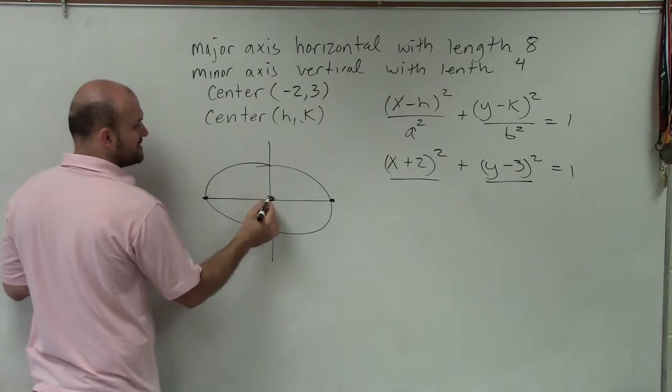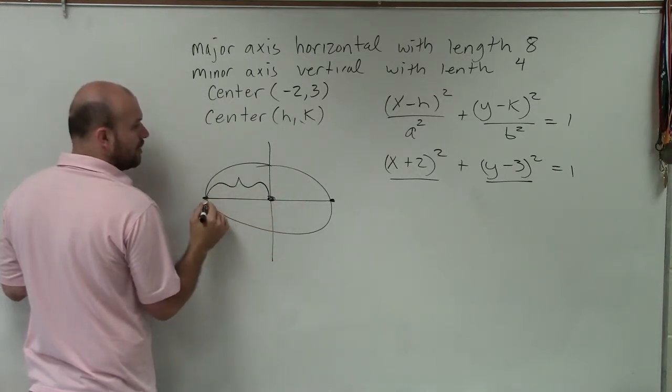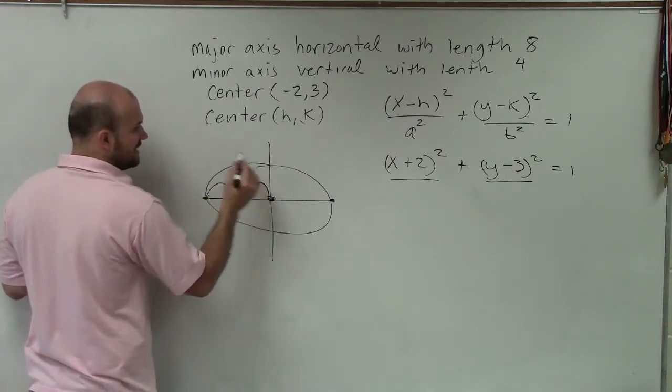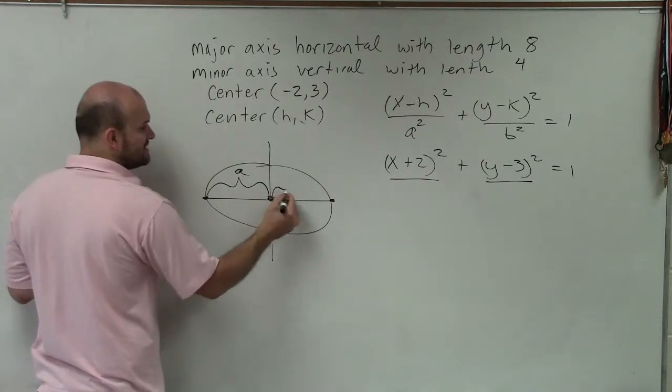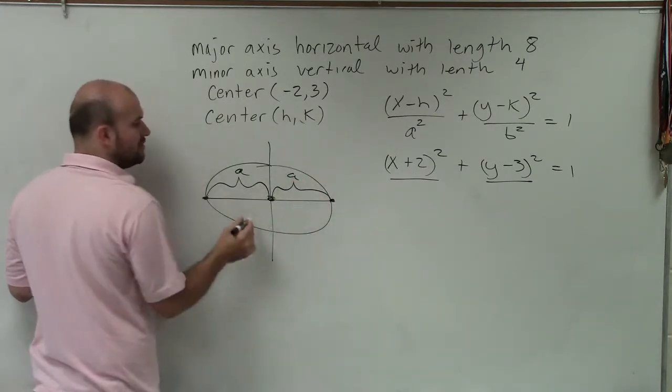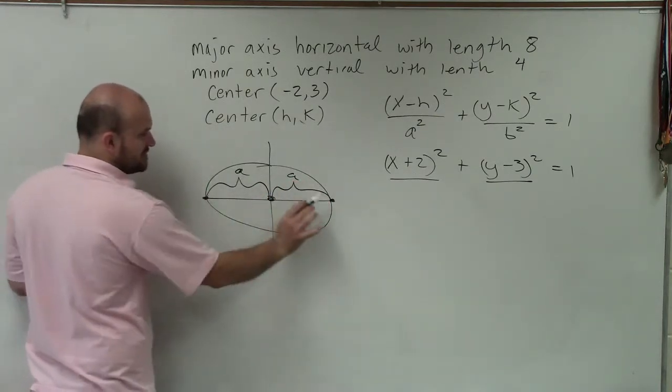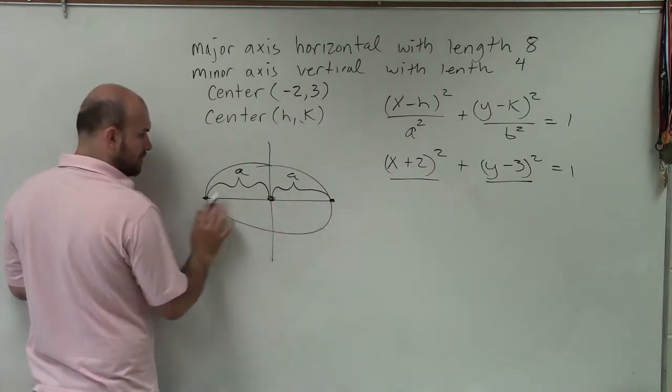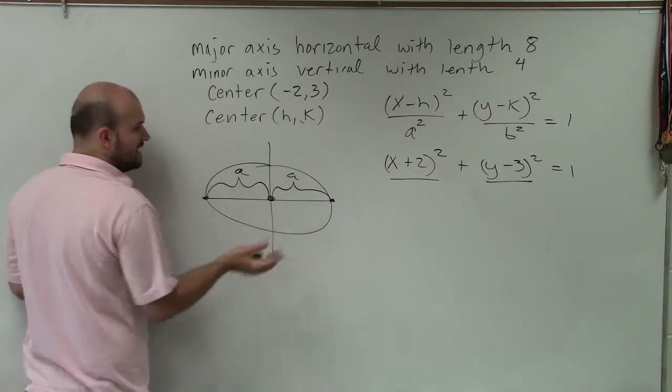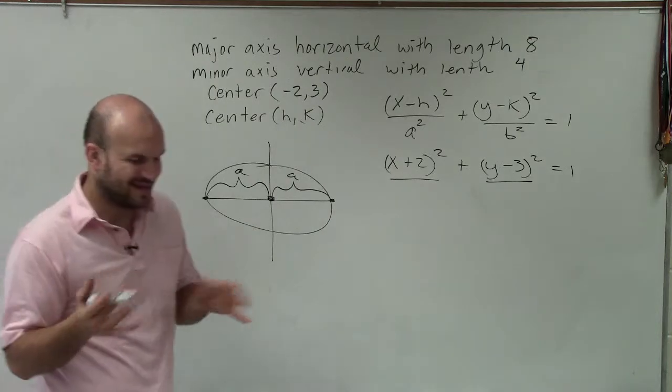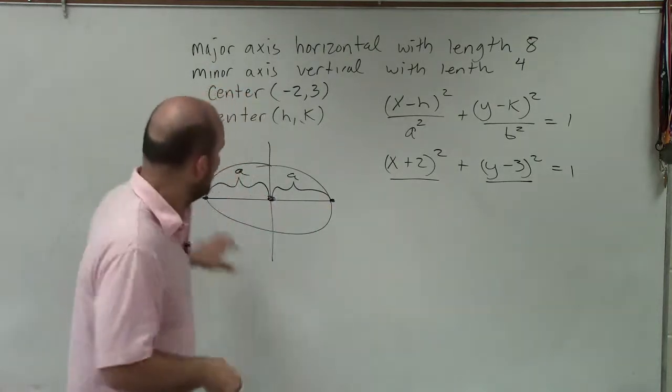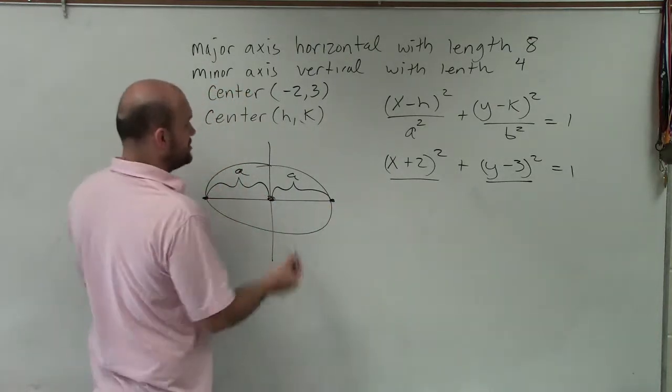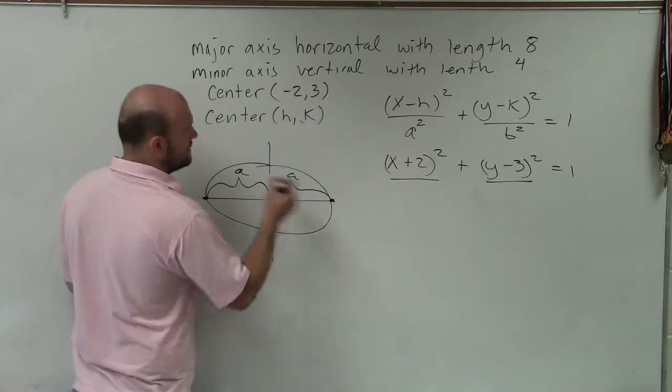Remember, I said the distance from the center to a vertex, or one of the vertices, is a. Well, that distance has to be the same. So therefore, the distance from one vertex to the other vertex is going to be 2a. So the length of the major axis is equal to 2a.